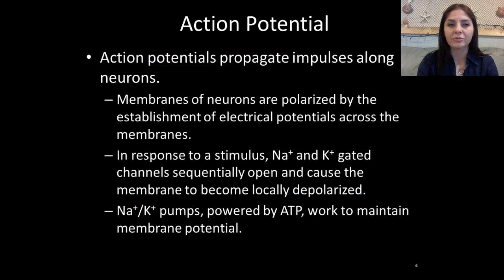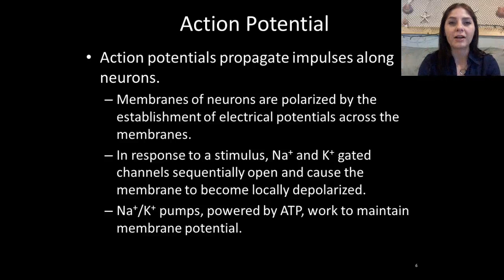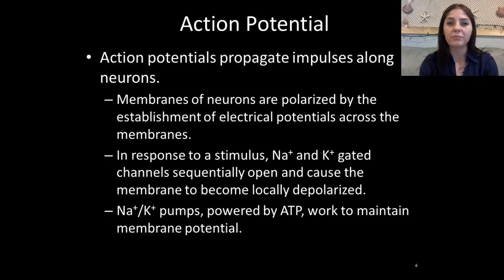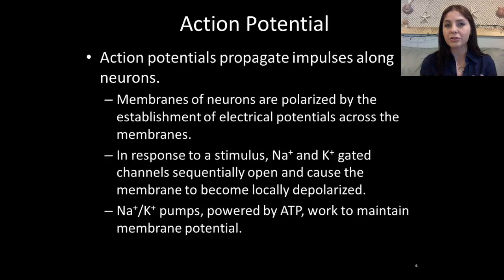Action potentials basically propagate impulses along the neurons. The impulse travels down the cell through the nodes of Ranvier, which are in between each of the Schwann cells, moving the impulse down the axon by creating action potentials. The membranes of neurons are polarized by the establishment of electrical potentials across the membranes, and these electrical potentials arise because of the amount of sodium and potassium either inside or outside the cell. When I use the word polar, it refers to something that has a negative charge and a positive charge, similar to a water molecule.